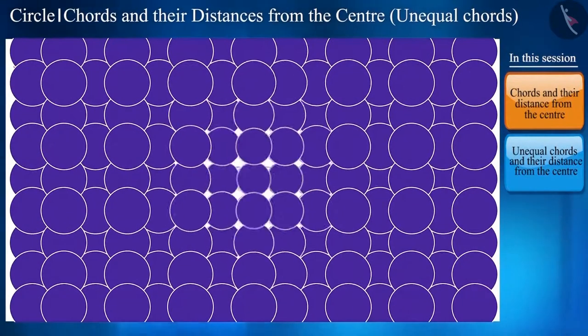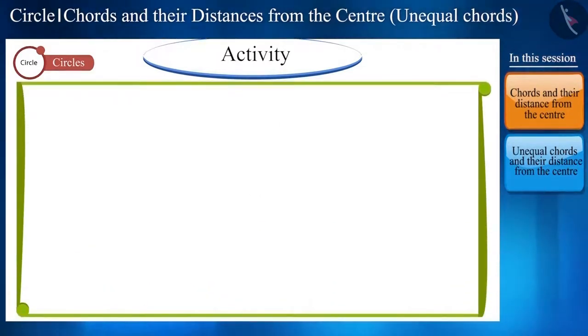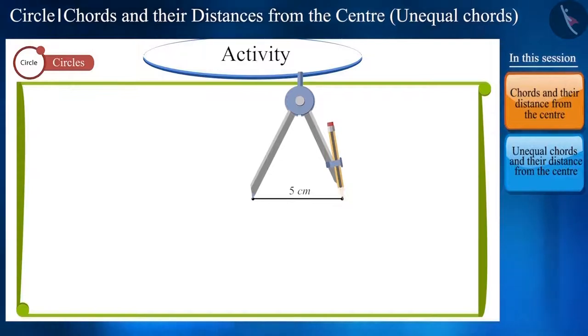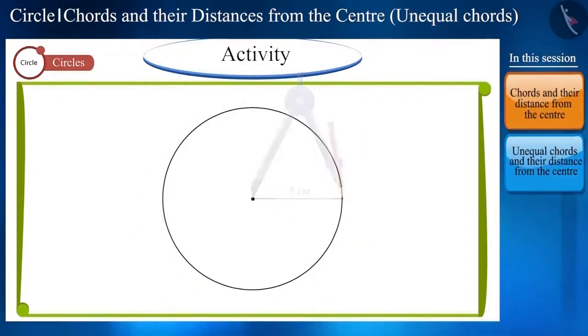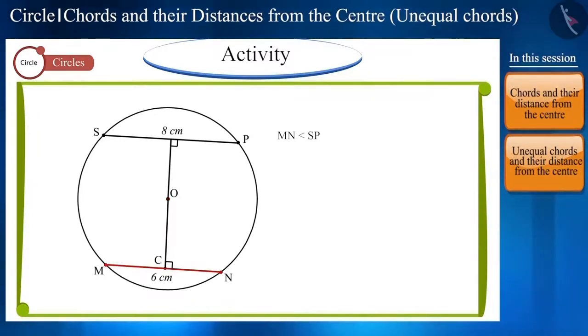Let's understand this process through an activity. Draw a circle with radius 5 cm whose center is O and draw two chords MN and SP whose lengths are 6 cm and 8 cm respectively. Here, we have taken two unequal chords. Now,